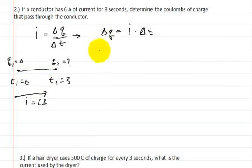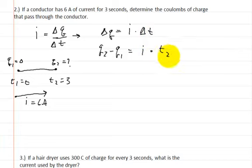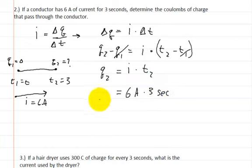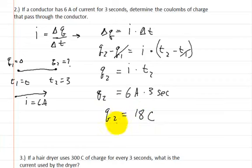Plugging those values in, q2 minus q1 is equal to the current times the change in time, which is t2 minus t1, and both q1 and t1 are 0. So you're just left with charge equals current times t2. The current is 6 amps and the time is 3 seconds, so q2 is going to be equal to 18 coulombs. That's how much charge you would have flowing through any one point in this wire.